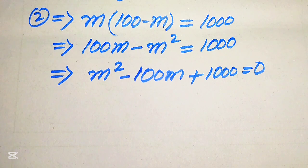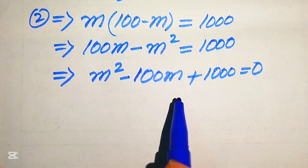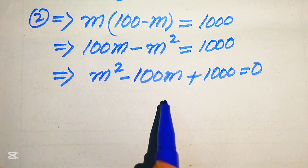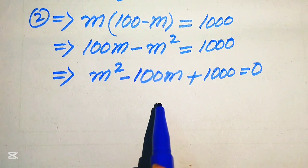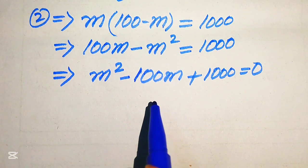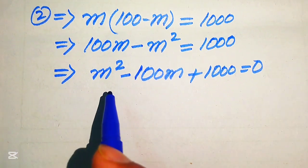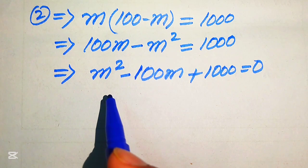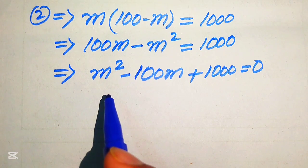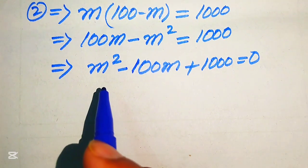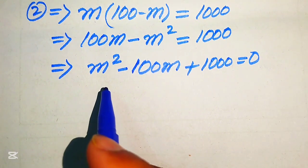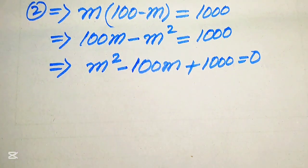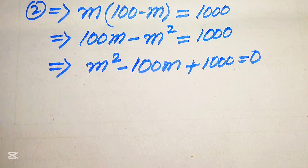There are three methods to solve the quadratic equation: the first method is the factorization method, the second is completing the square, and the third method is by using the quadratic formula. Here we apply the quadratic formula to solve this quadratic equation.